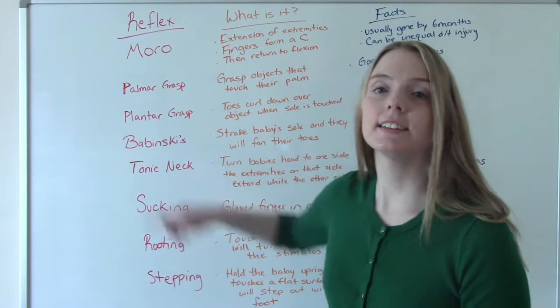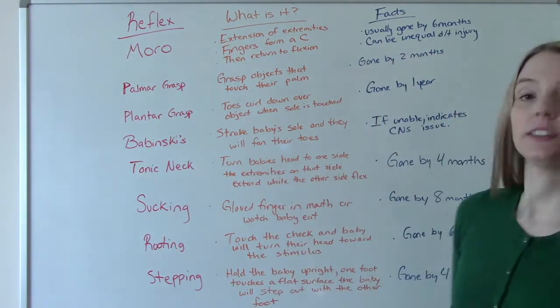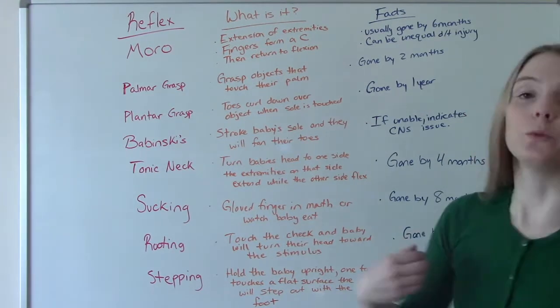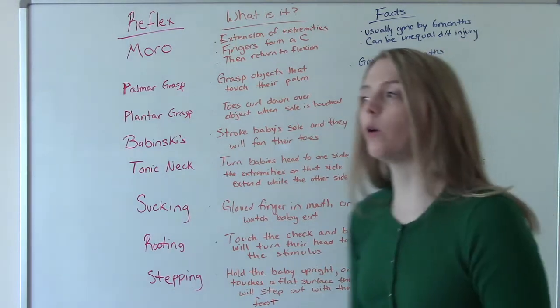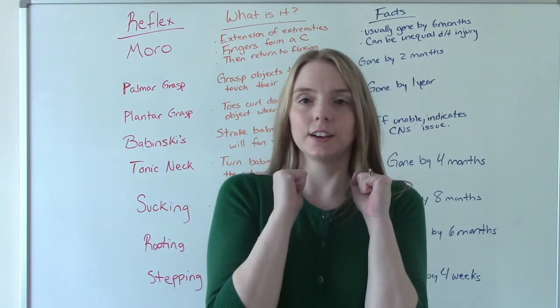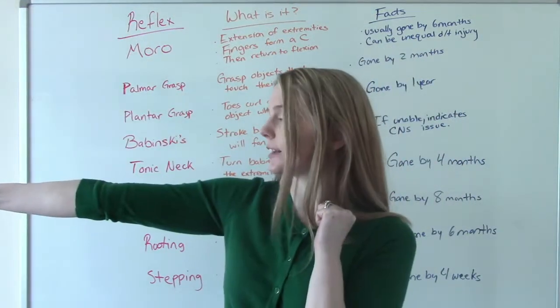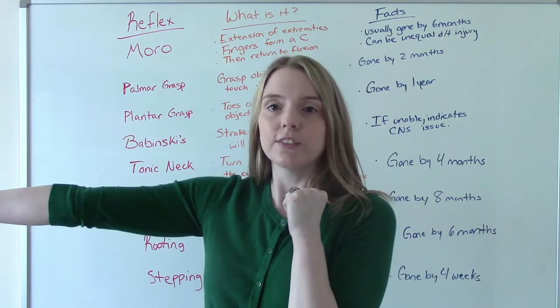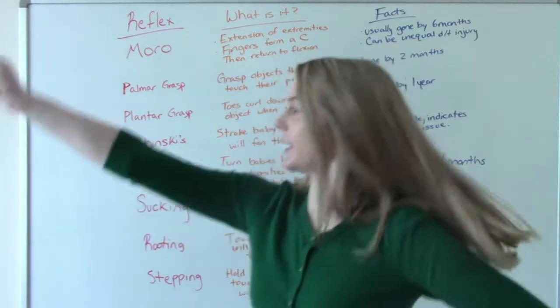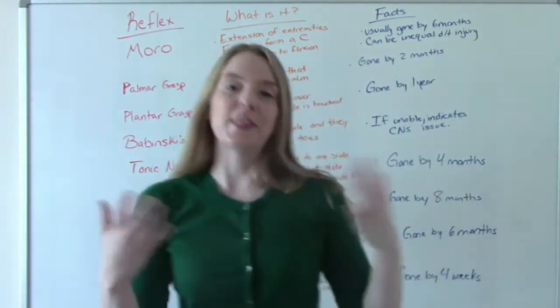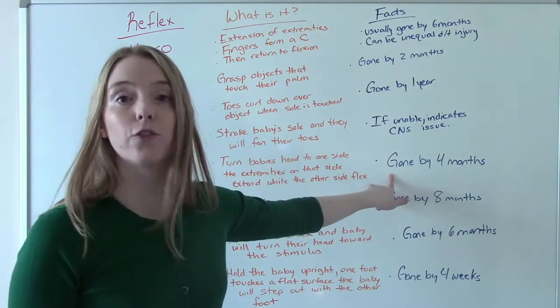Tonic neck is sometimes called the fencer's position. What we do is turn baby's head to one side, and the extremities on that side will extend, and then the opposite side will flex. So baby's like this, we turn the head to this side, these extremities will extend, and this one will stay flexed. They call this the fencer's position because it's like if you've ever seen somebody fence, they stand like this. That's why they call it that. That's the tonic neck. This is gone by four months.